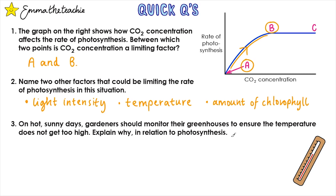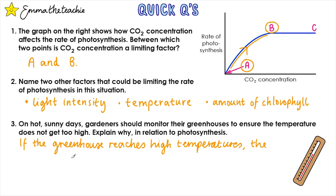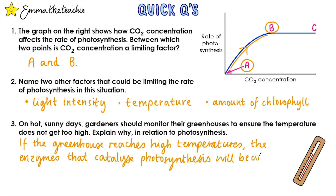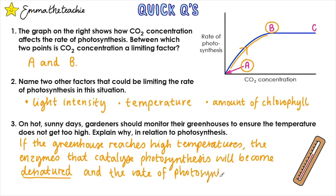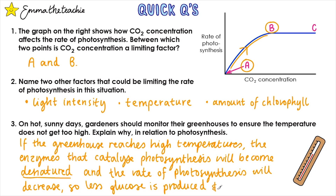Question 3: on hot sunny days, gardeners should monitor their greenhouses to ensure the temperature does not get too high — explain why in relation to photosynthesis. If the greenhouse reaches high temperatures, the enzymes that catalyse photosynthesis will become denatured — that's an important word to have in your answer. The rate of photosynthesis will decrease, so less glucose is produced and growth of the plant is stunted.